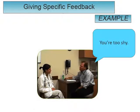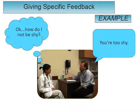You could outright tell her that she's shy, and while this is giving her feedback, it's not exactly specific. The result is that the learner understands that she's shy, but she doesn't know what to do to correct it.